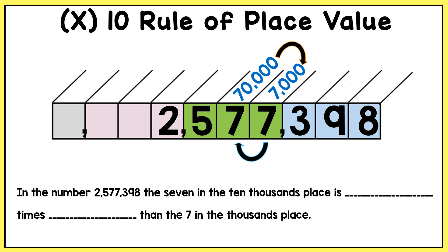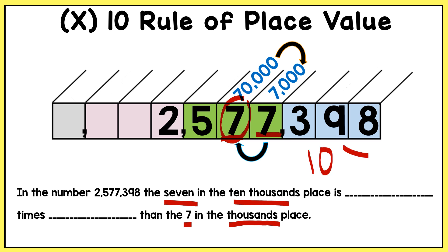Let's answer a question using the times 10 rule. In the number 2,577,398, the 7 in the ten-thousands place is blank times blank than the 7 in the thousands place. Here's the 7 in the ten-thousands place and the 7 in the thousands place — the 7 in the ten-thousands place is 10 times greater than the 7 in the thousands place, because multiplying by 10 moves you to the next place.